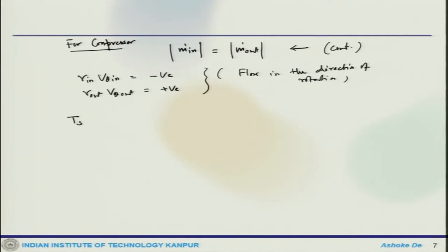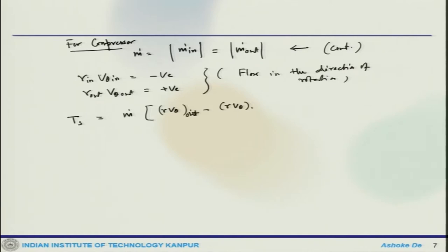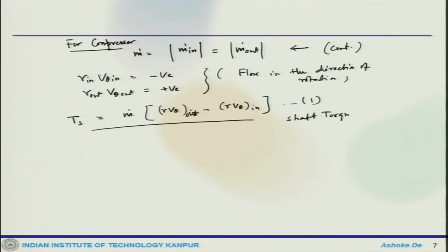So, the torque equation T_s becomes m-dot times (R·V_theta_out minus R·V_theta_in). This is known as the shaft torque equation, where T_s is the torque applied by the shaft of the rotor.